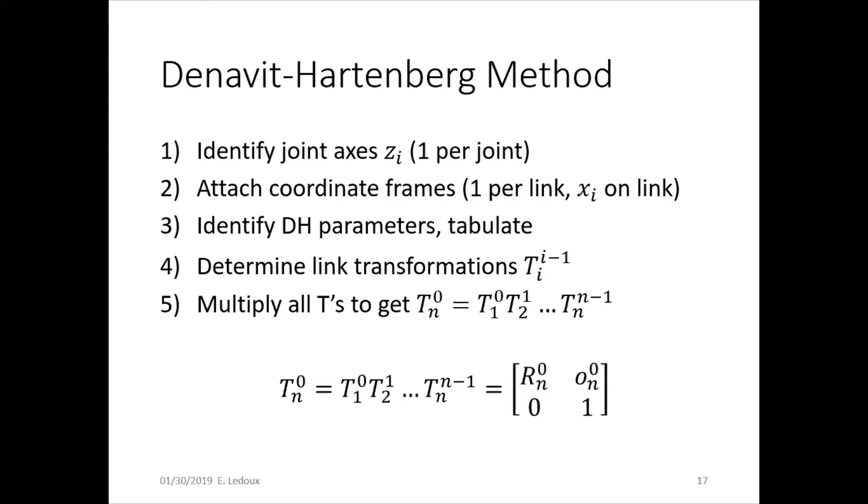Once you've got the coordinate frames, step three is identify the DH parameters: theta, d, a, alpha. Put those in the table. Then define the link transformations for each joint. You would go from joint 1 to joint 0, then joint 2 to joint 1, joint 3 to joint 2, and so on. And finally, multiply all of them together to get the transformation from the base to the tip.